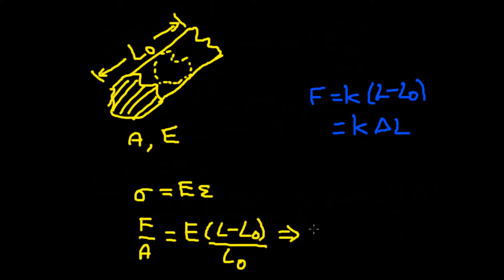So this means the force is equal to elastic modulus times area times change in length divided by the original length. So if you compare this equation with this equation, then the spring constant of this material is k equals EA divided by L0.